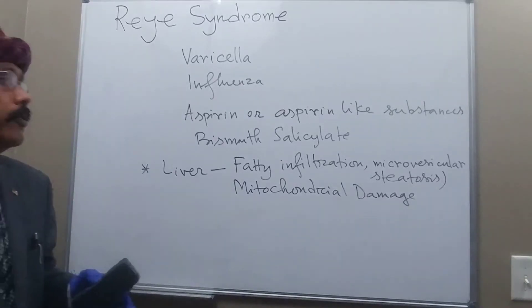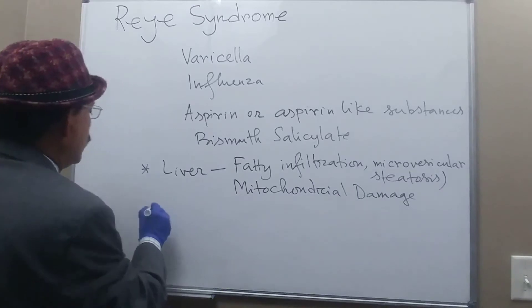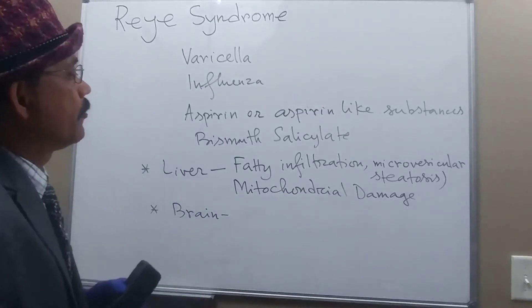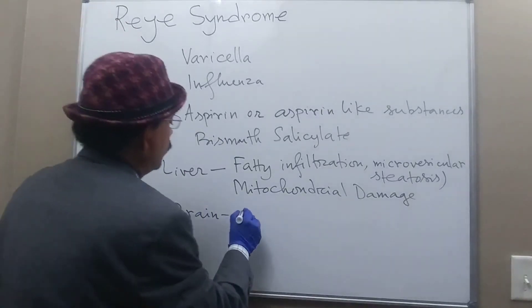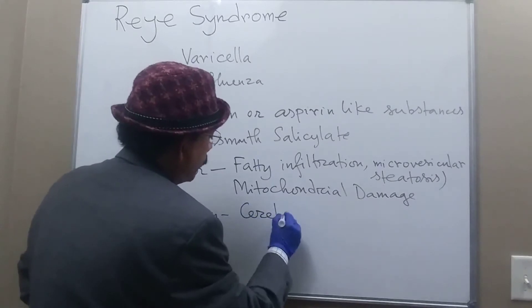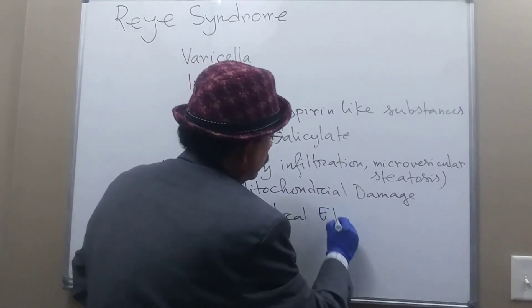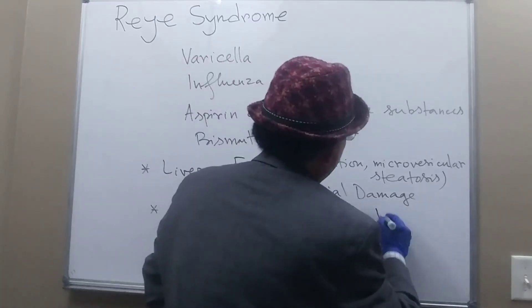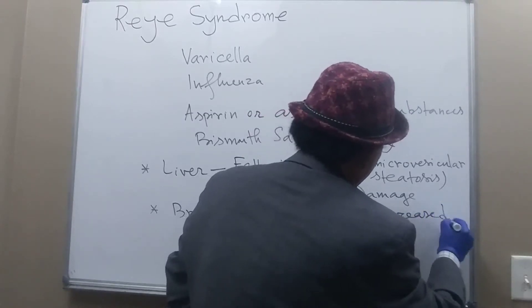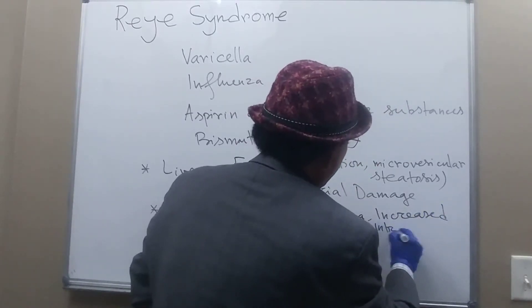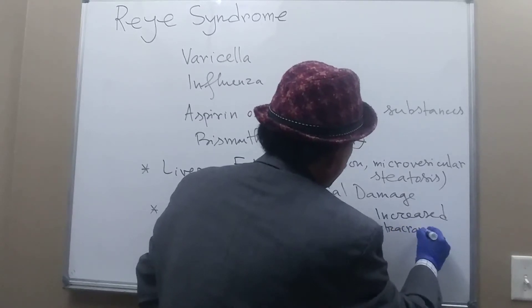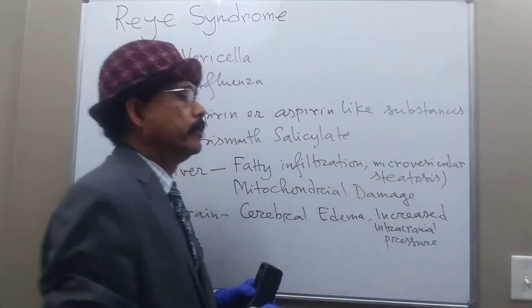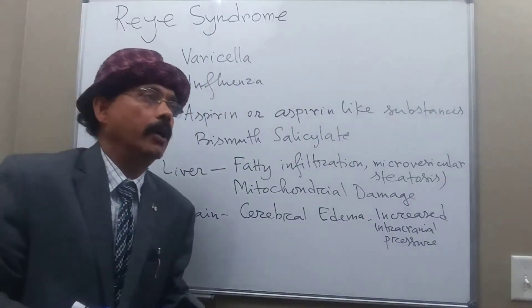In the brain, we get encephalopathy. There will be cerebral edema and increased intracranial pressure. So both the liver and brain are affected.